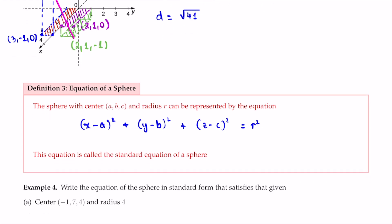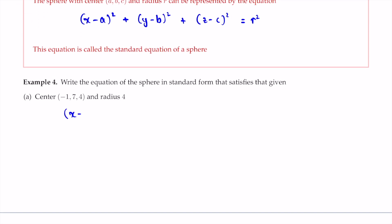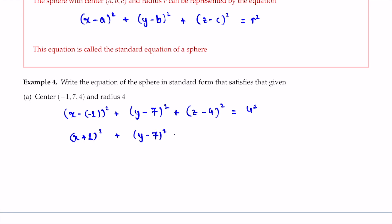In the next example, we write the equation of a sphere in standard form given center (-1, 7, 4) and radius r = 4. Substituting: (x - (-1))² + (y - 7)² + (z - 4)² = 4², which simplifies to (x + 1)² + (y - 7)² + (z - 4)² = 16. That is the equation of the sphere in standard form.